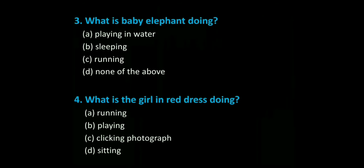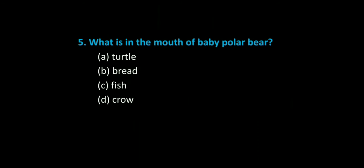Question 4: What is the girl in red dress doing? Options: 1. Running, 2. Playing, 3. Clicking a photograph, 4. Sitting. Have you chosen the answer? Question 5: What is in the mouth of the baby polar bear? Options: 1. Turtle, 2. Bread, 3. Fish, 4. Crow.